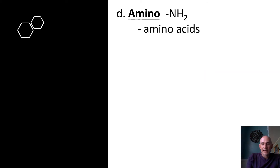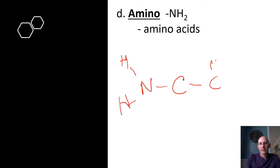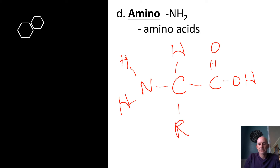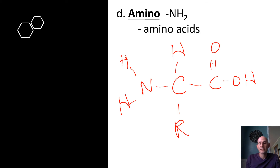In an amino acid, we see a central carbon bonded to a nitrogen with two hydrogens — that's the amino group — and then you have the carboxylic acid part, a hydrogen, and an R group which varies from amino acid to amino acid. The amino group and carboxylic acid allow amino acids to form long chains of proteins, which essentially run everything inside our cells.